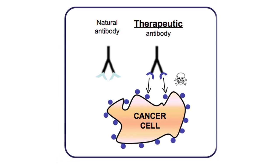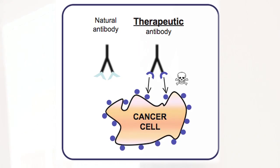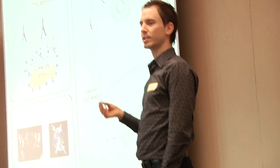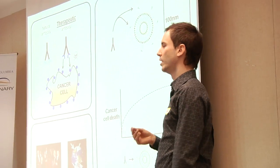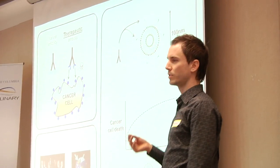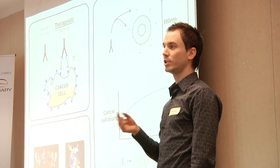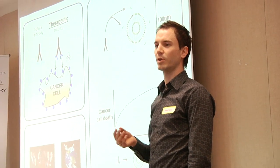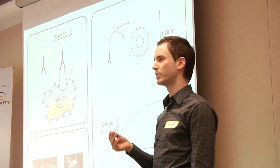Nowadays we can actually engineer antibodies so they do recognize cancer cells, and these are a special class of drugs called therapeutic antibodies. There's about 30 of these drugs in use today, and they represent a huge industry considering that each of these drugs takes about $1 billion and 10 years worth of development.